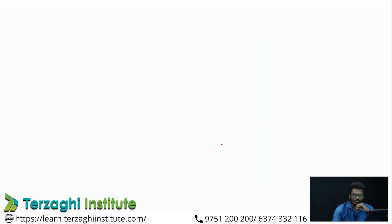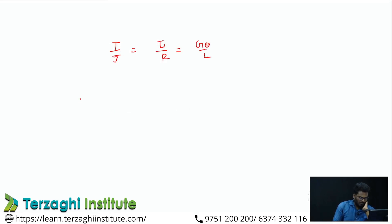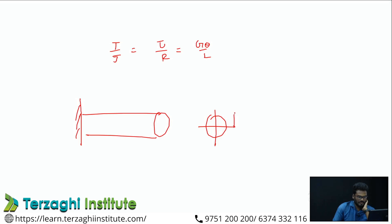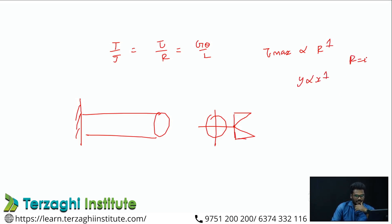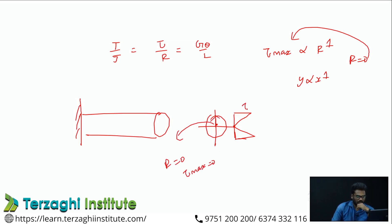To recap: T/J = τ/R = Gθ/L. The shear stress variation across the cross-section is zero at the neutral axis and maximum at the outer boundary, because tau_max is proportional to R. Since it is proportional to R to the power 1, the variation is linear. At radius zero, shear stress is zero; at maximum radius, shear stress is maximum.